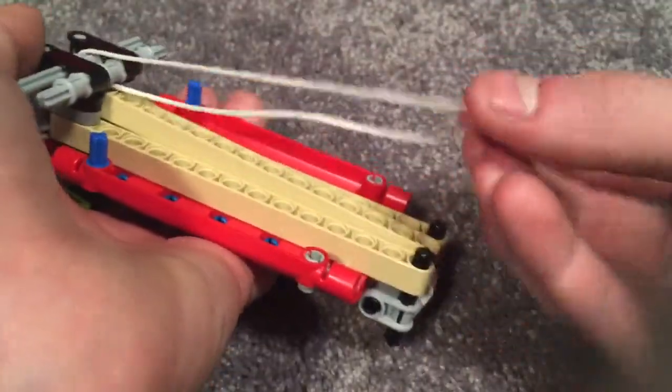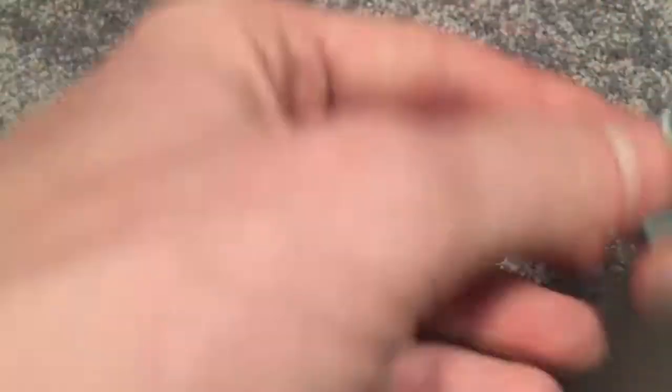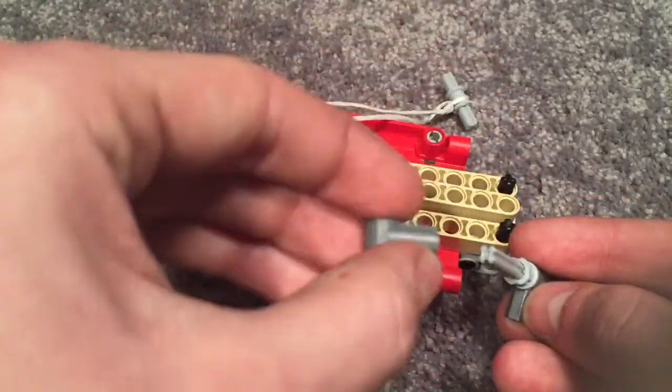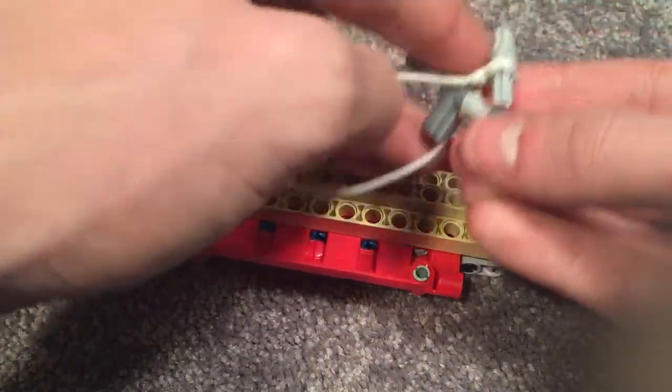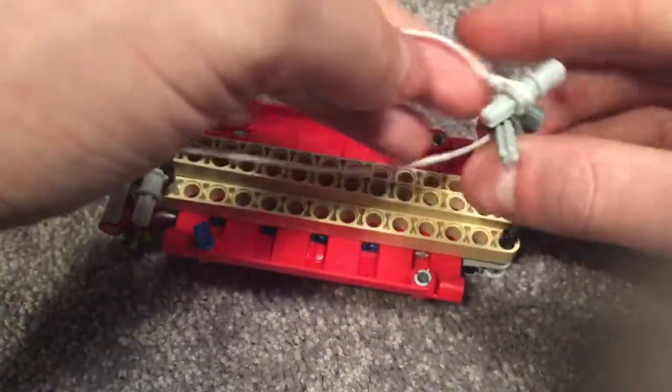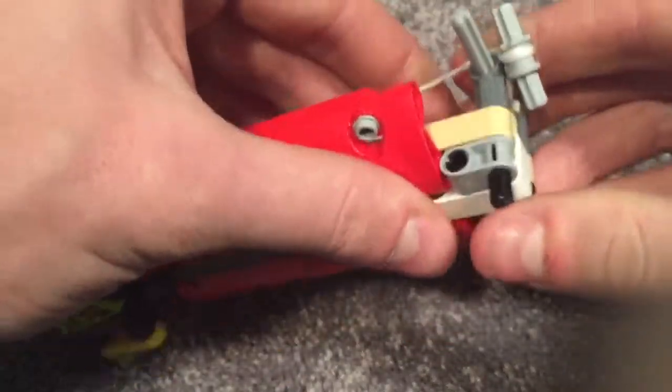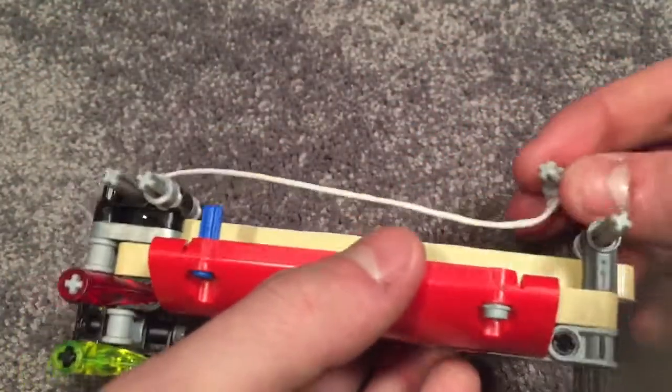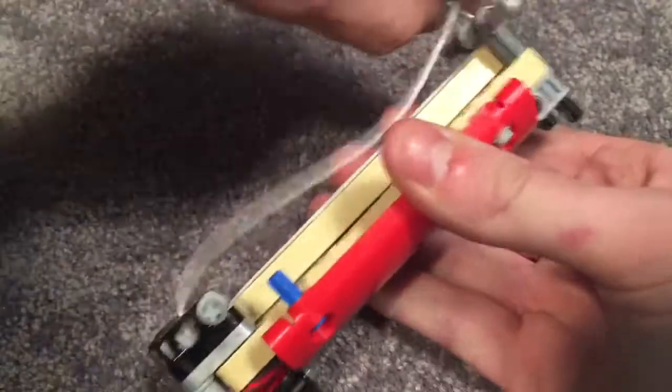Now it'll be easier once I get this piece on. Take a seven stud long axle bushing and two of these connectors here and just put them on like this, put it through the string, and attach it like this. There you go, now you can do the mechanism box.